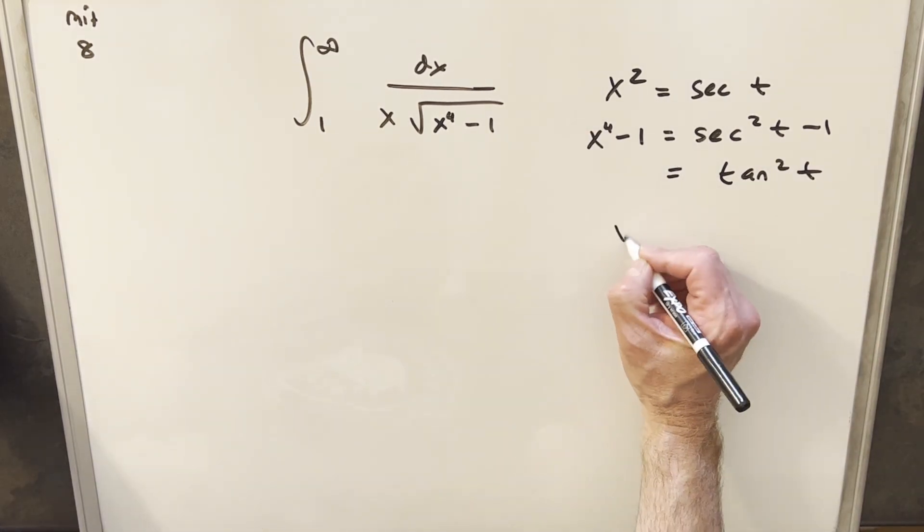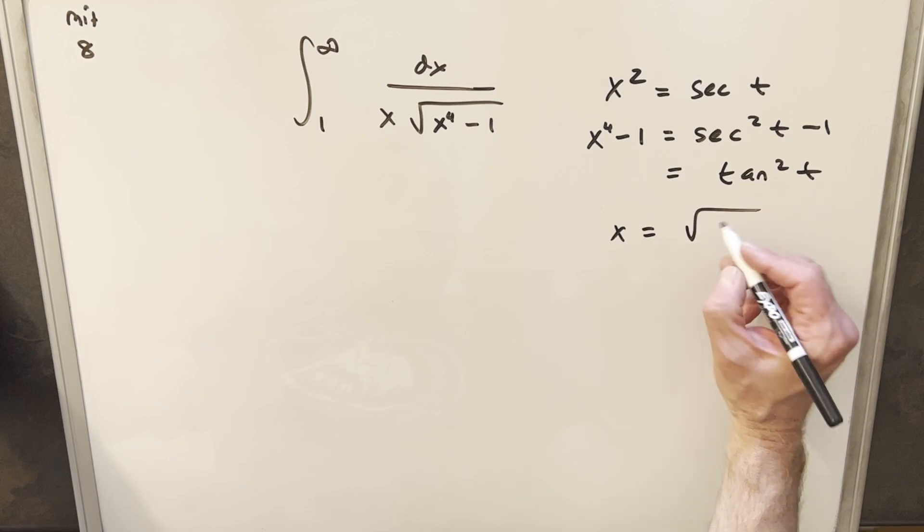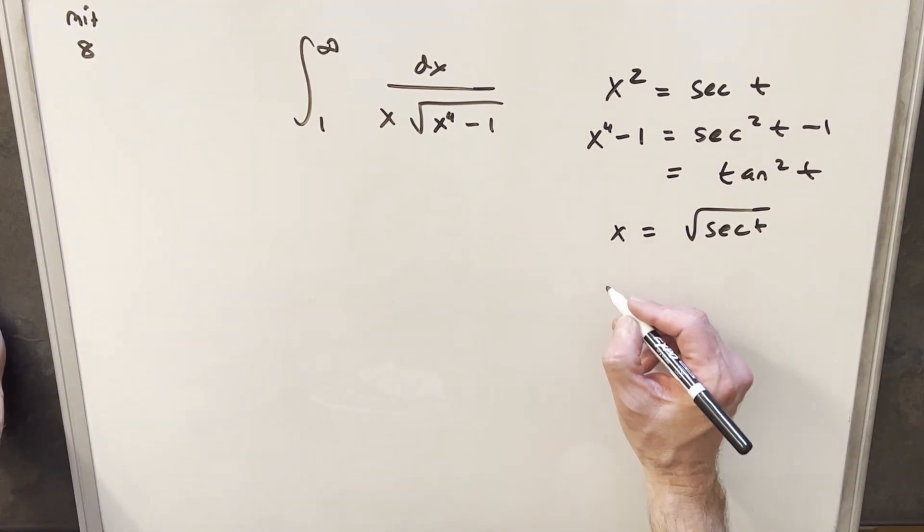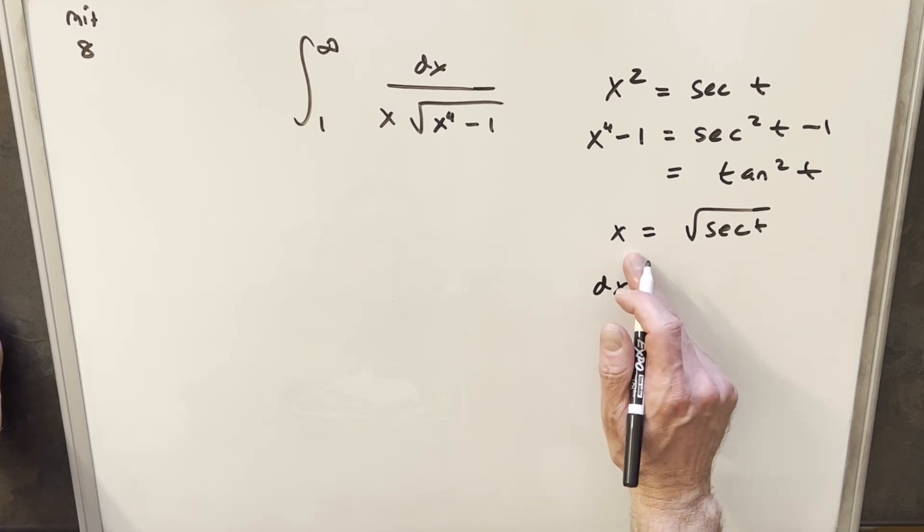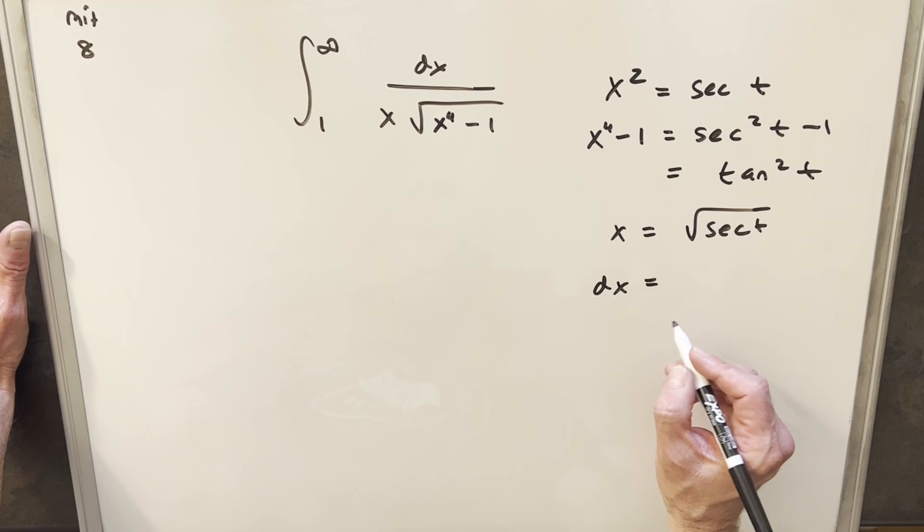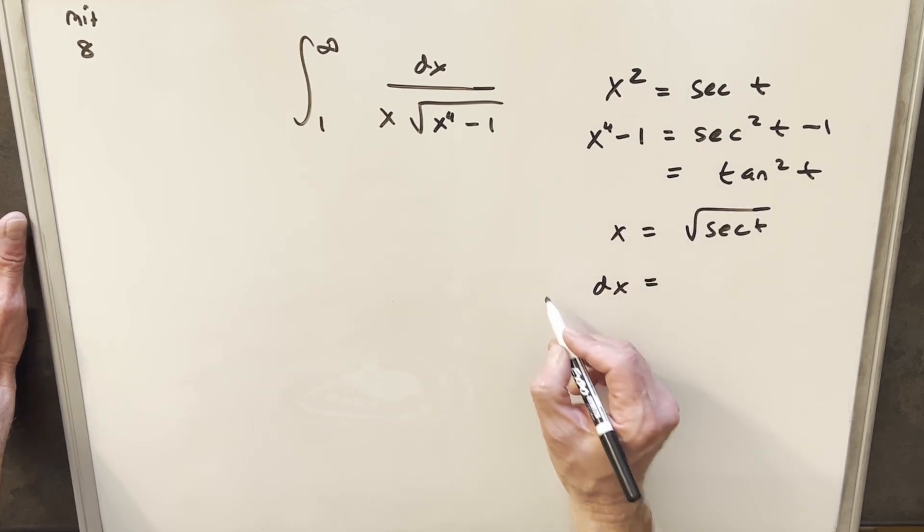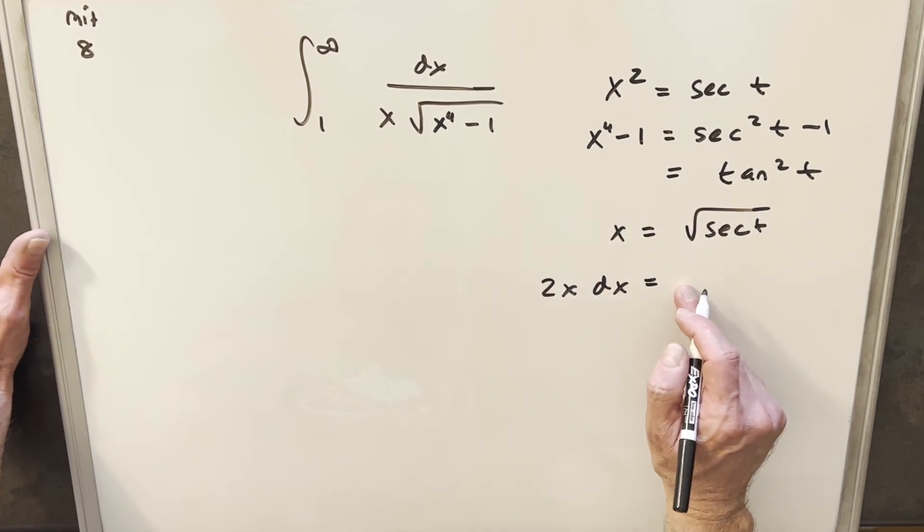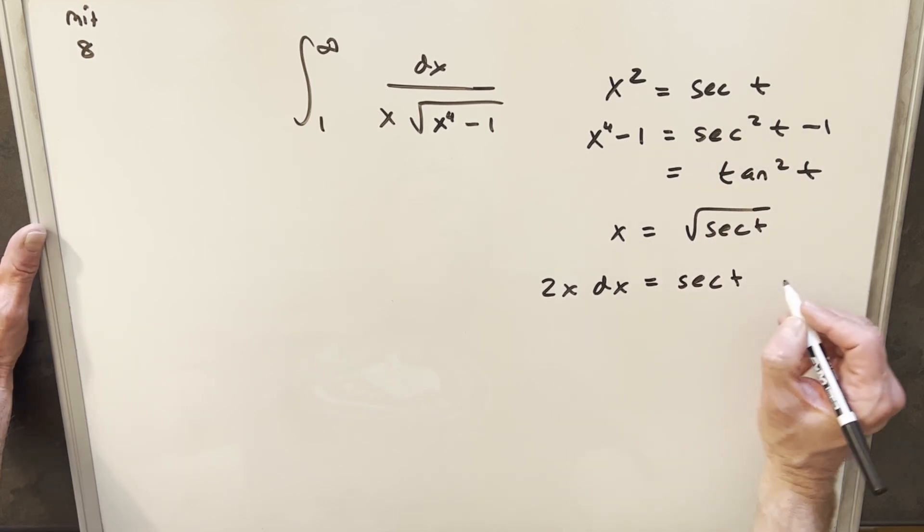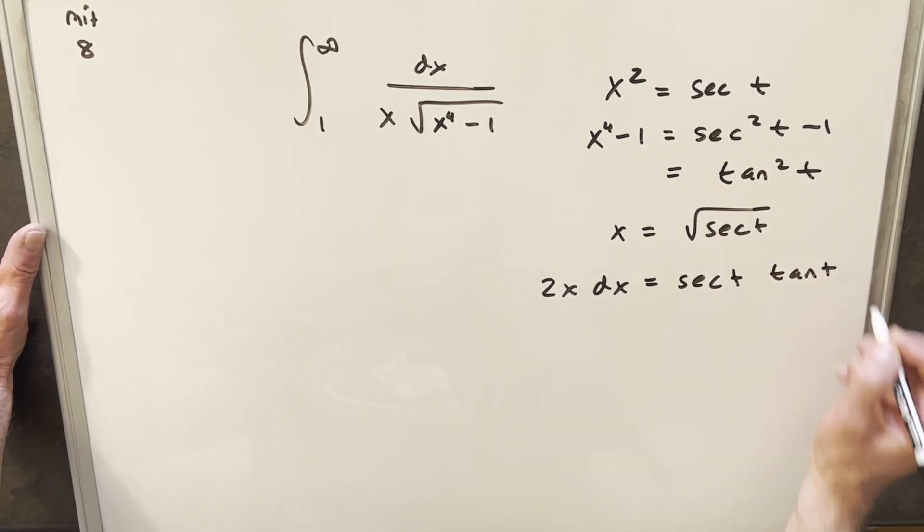Now let's also get a value for x. So x is just going to be the square root of secant of t. And now I just want my dx value but I think instead of differentiating this I think I'm going to choose to differentiate that. It doesn't really matter very much but let's just do it that way. So derivative of this is going to be 2x dx and then here derivative of secant t is just secant t tan t.